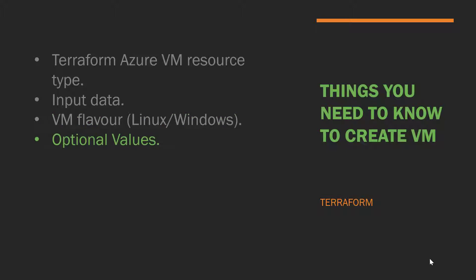We will also look at some of the optional values in the input data. For example, your virtual machine might have optional properties such as domain join, availability set, VM scale set, public IP address, dynamic private IP address, or NSG rules configured for your virtual machine subnet or network interface. We'll look at how to incorporate all those optional values in the Terraform scripting. I hope this is going to be a very exciting journey to learn this scripting.